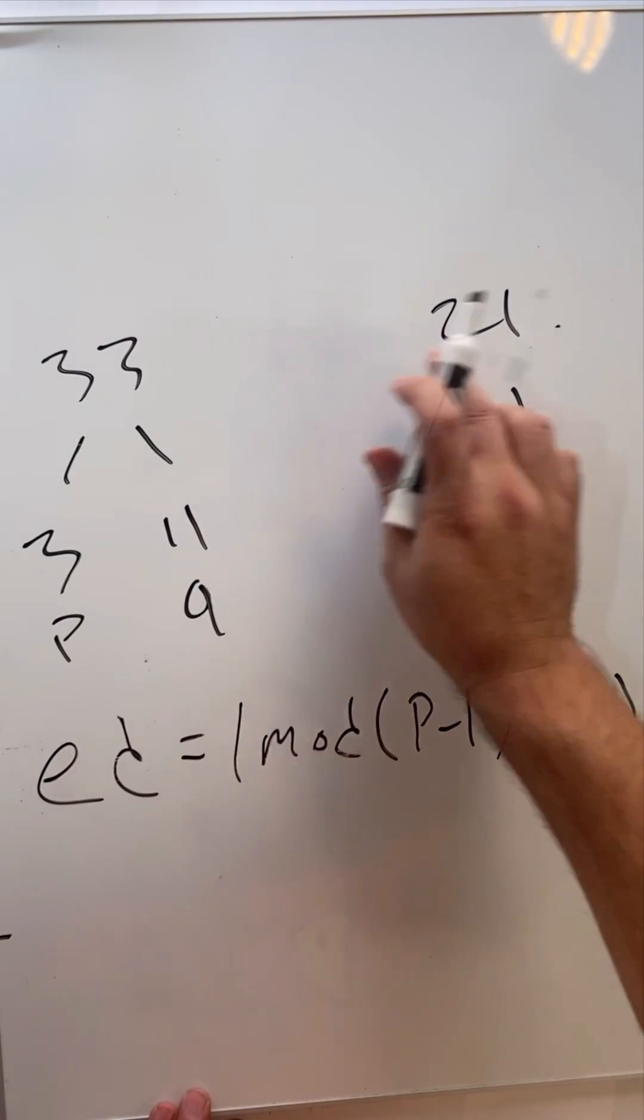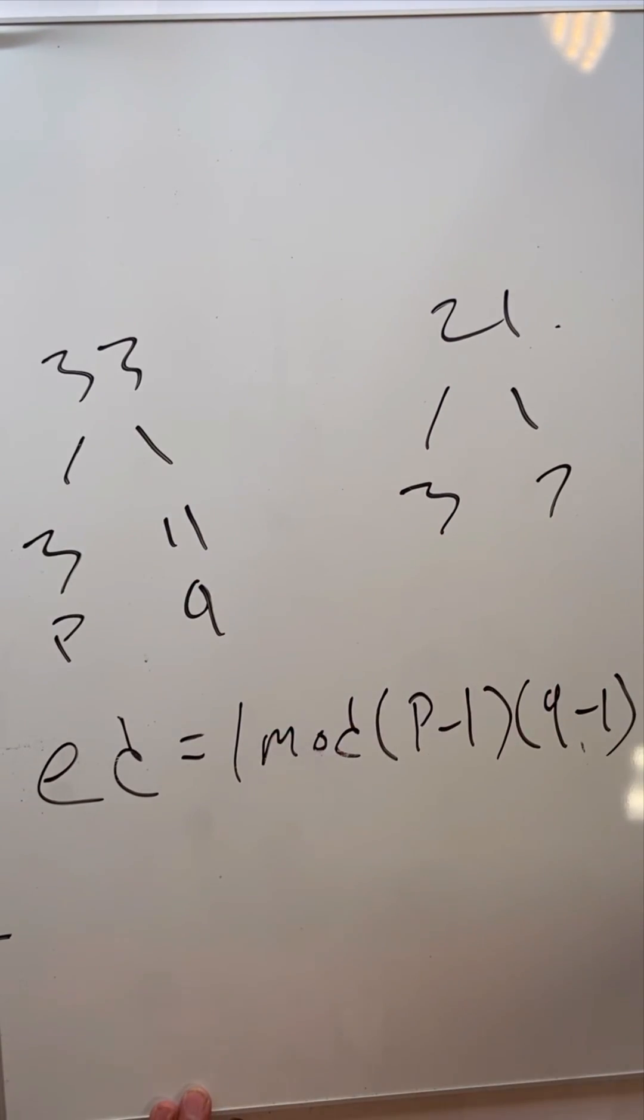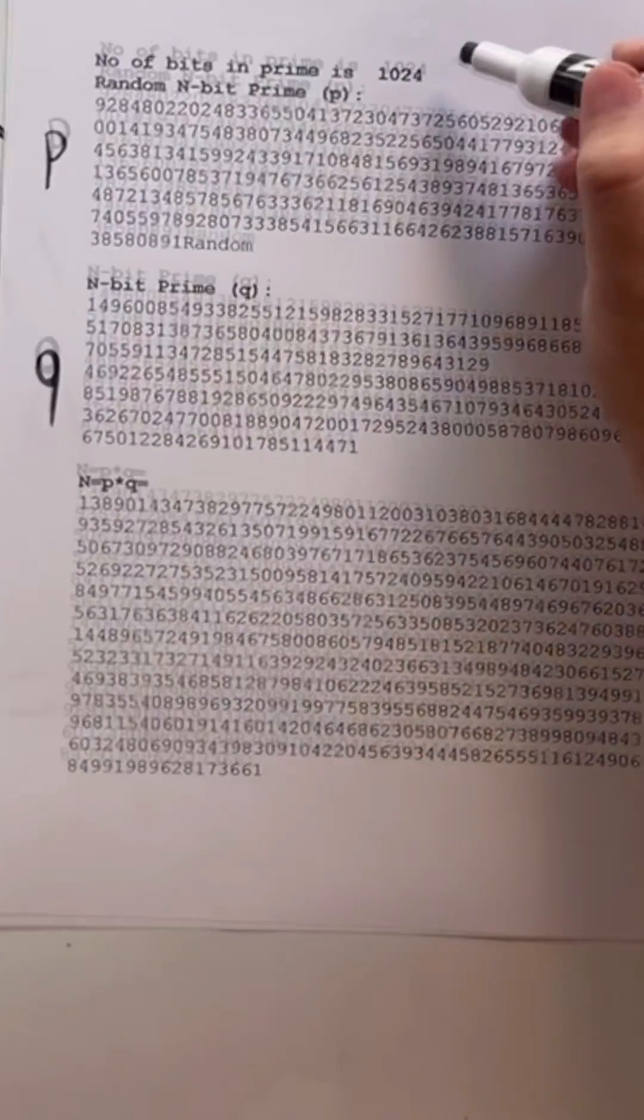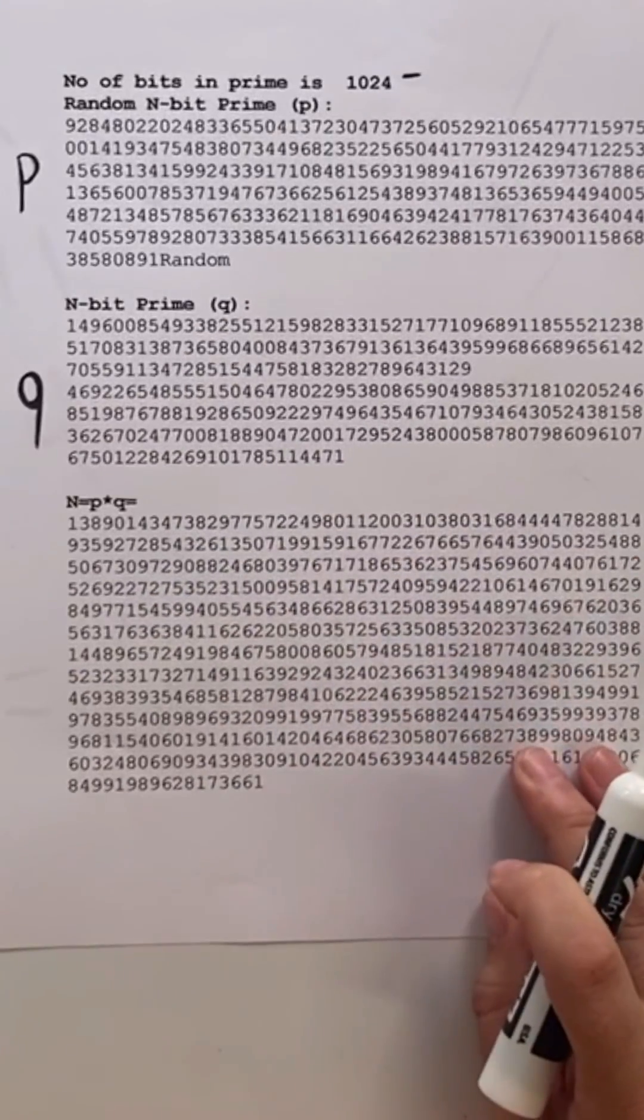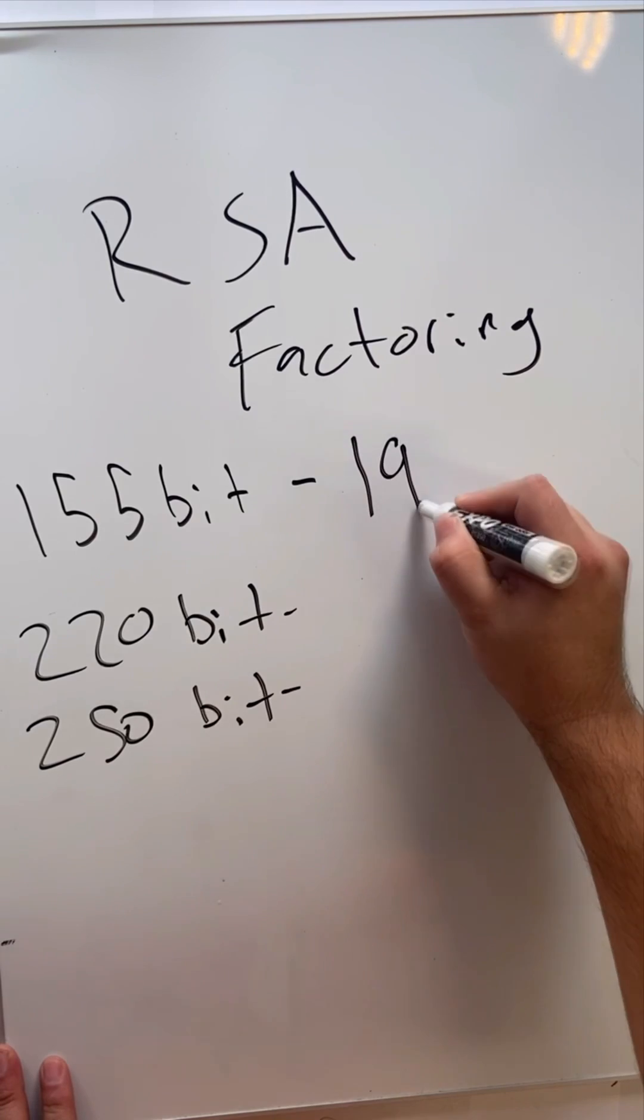You might think that'll be pretty easy if there's only one set of prime numbers that you can factor it to. With small numbers like this, sure, but in practice this is what a 1024 bit number looks like. And you might think, well surely computers can factor it quickly.